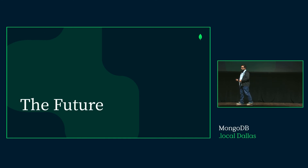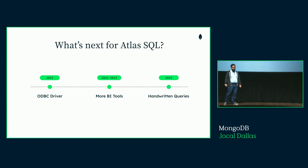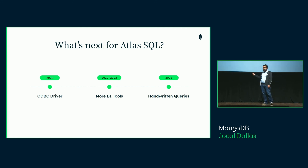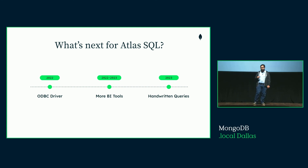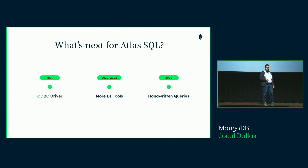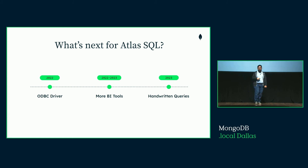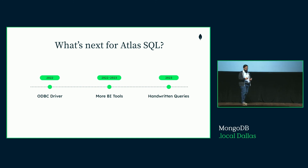As we bring things to a wrap, let's take a look at what the future holds for Atlas SQL. The first thing we've already done is release the JDBC driver, and right now we're working on the ODBC driver. Once we're done with the ODBC driver, we'll start working on adding more support for other BI tools — Power BI and Looker are some of our first priorities based on customer input. We're also going to be looking into building a workbench-style tool like dBeaver. Looking further into 2023, we're looking at improving the ergonomics of handwritten queries, with helpers like an interactive sub-shell or SQL queries you could write directly into the Mongo shell as an easy way to interact with this tool.